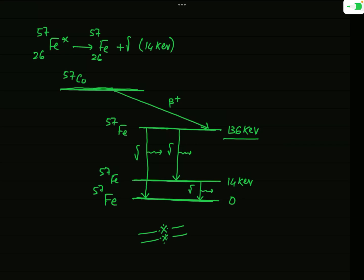The nucleus Fe-57, in its second excited state, emits a photon of 136 keV and reaches its ground state. The energy of that gamma photon is 136 minus 0 = 136 keV, since the transition is to the ground level. So when Fe-57 in its second excited state transits directly to its ground state, a photon of energy 136 keV is emitted.